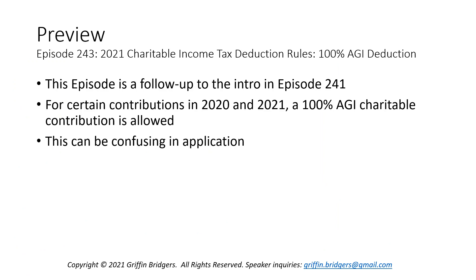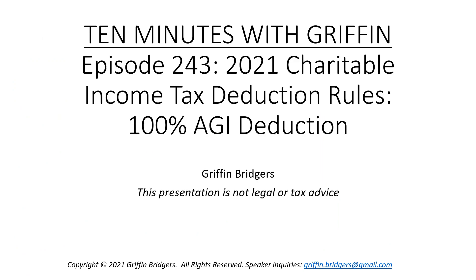As a follow-up to episode 241, there's been a lot of talk about the 100% of AGI deduction that you can get for cash contributions to charities in 2020 and 2021. Their different rules can be confusing in application. As a continuation of the 2021 charitable income tax deduction series, today we're going to dive into the numbers behind some of these rules. I'm Griffin Bridgers, and this is 10 Minutes with Griffin.